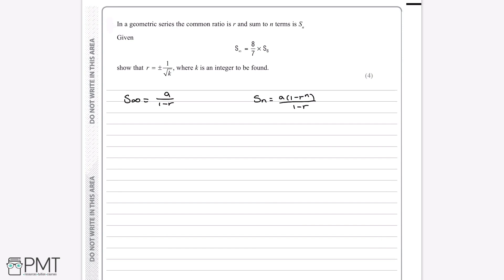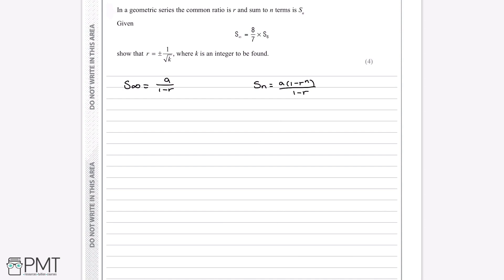Now we have these two formulas, we can put them into the equation that we were given. The sum to infinity is a/(1-r), and then we have 8/7 multiplied by the sum of the first 6 terms. So in the sum of n terms formula, we replace n with 6, so we have 1-r^6 instead of n, and this is all divided by 1-r. Writing out the formula in this form gives us our first mark.